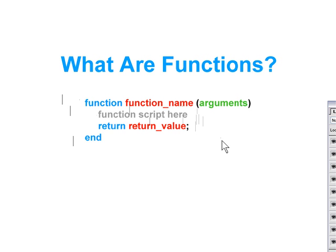For example, calculate_tax. Next thing we've got here is the return statement — that's the return portion of our function and it returns a value when the function is called. Now in this particular case that is also an optional portion and we'll discuss that further on in this tutorial.